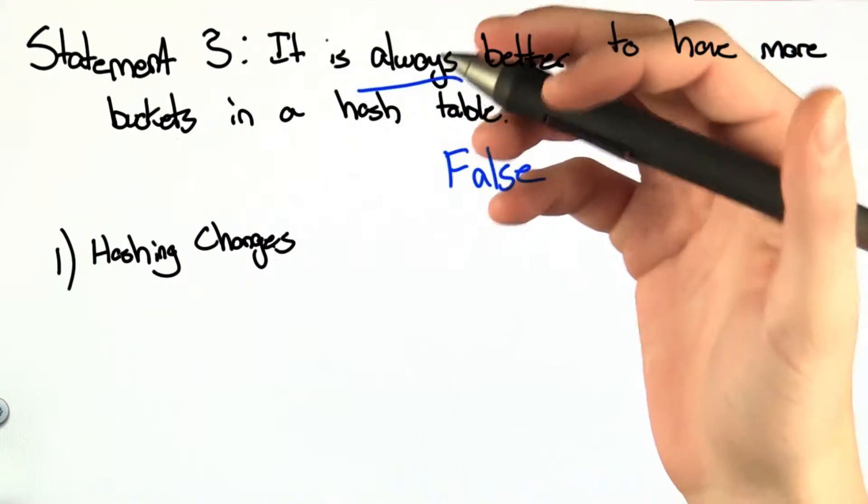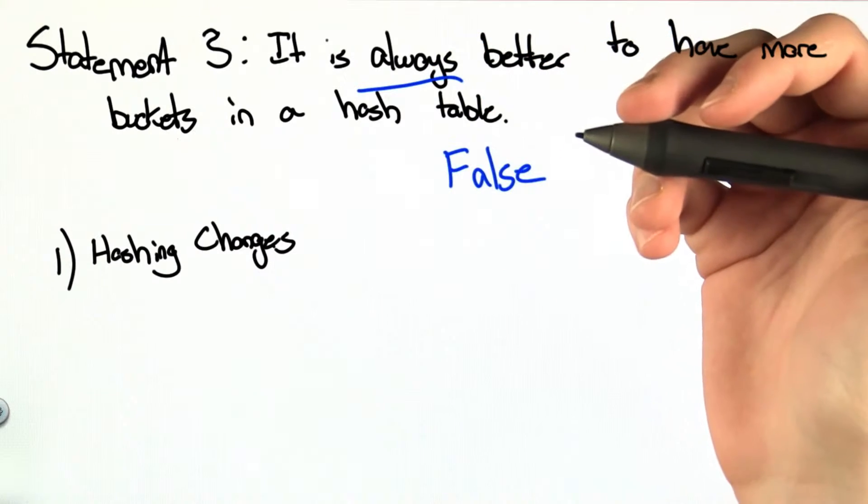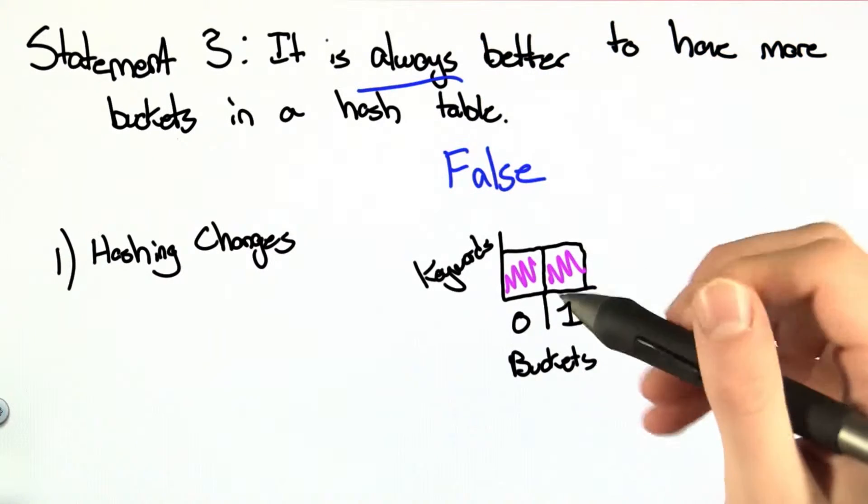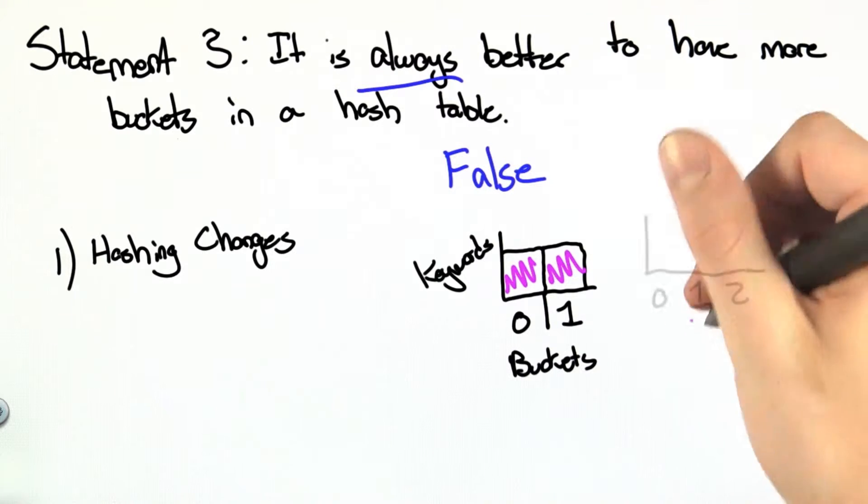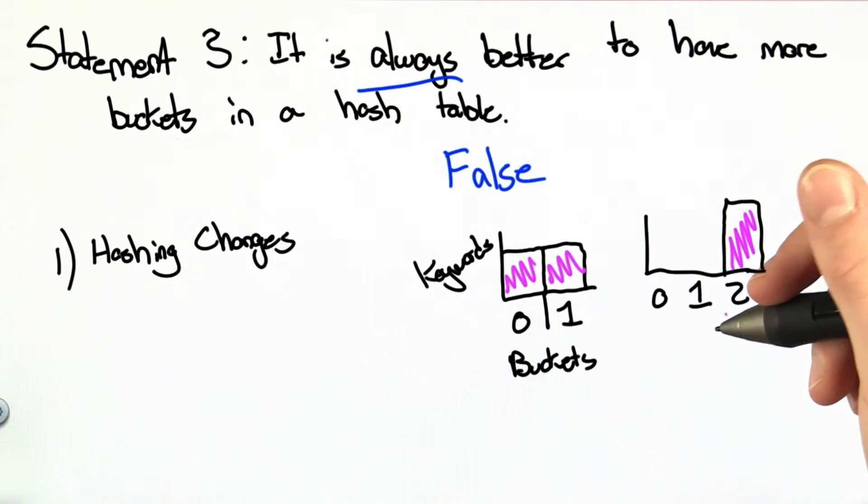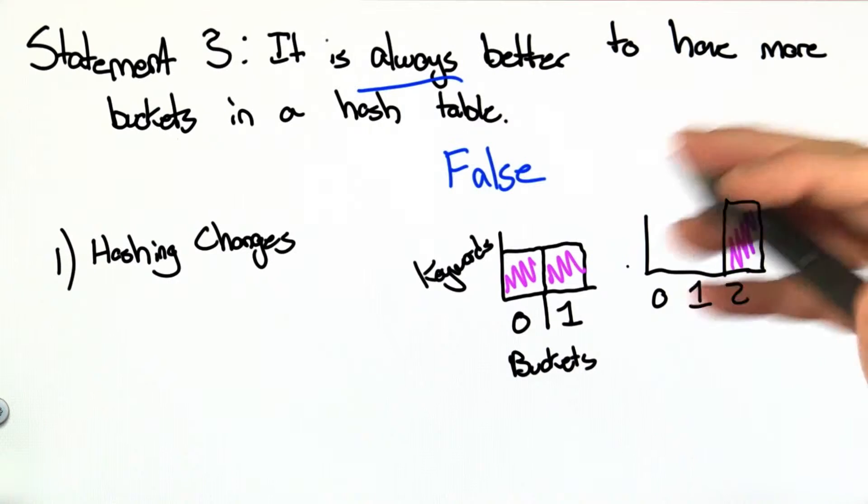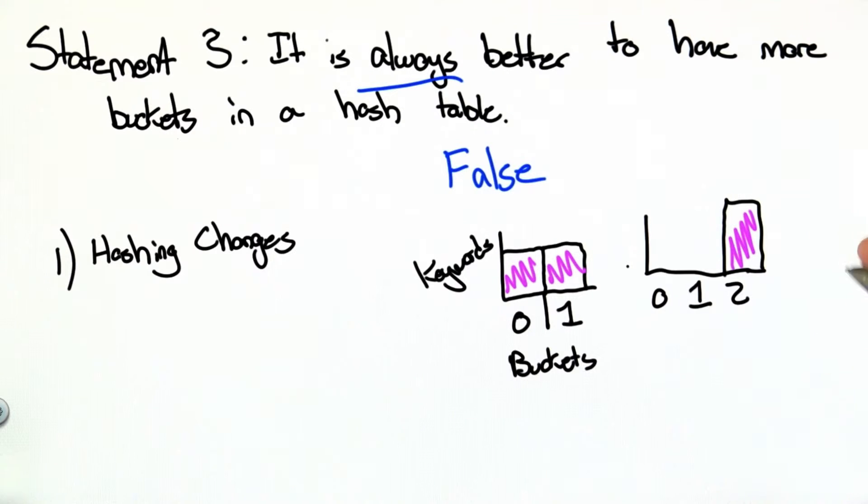The first reason is because changing the number of buckets, be it more or less, changes where keywords hash to. It could be the case that with two buckets, I have a good distribution. But if I add a third bucket, the hash function is such that everything lands in that new bucket. We choose hash functions carefully so that this is less likely, but depending on the keywords you're using, this is still possible.